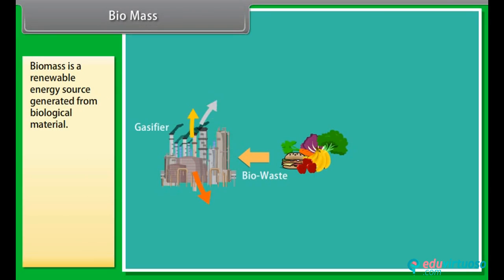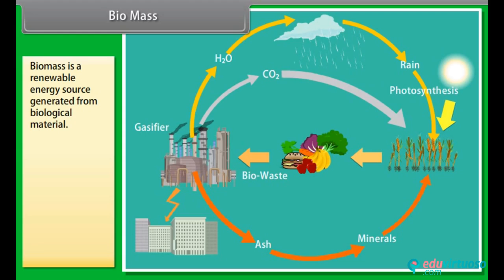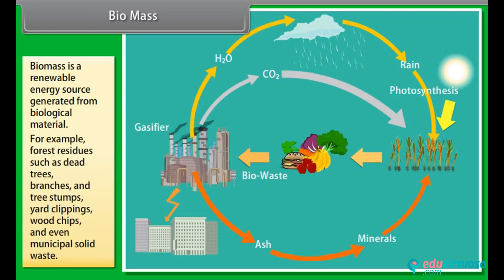Biomass. Biomass is a renewable energy source generated from biological material that is derived from living or recently living organisms. As an energy source, it is either used directly or converted into other energy products such as biofuel. For example: forest residues such as dead trees, branches, and tree stumps; yard clippings; wood chips; and even municipal solid waste. Biomass also includes plant or animal matter that can be converted into fibers or other industrial chemicals.